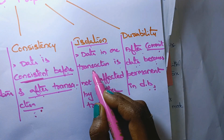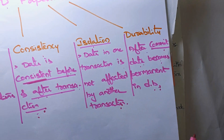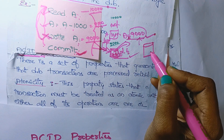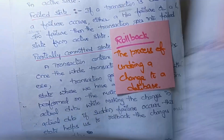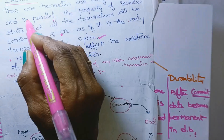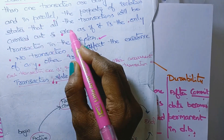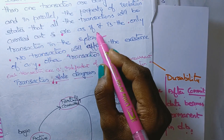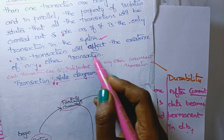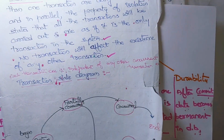Isolation means data in one transaction is not affected by another transaction. A database can be accessed by multiple users at a time. In a database system where more than one transaction is being executed simultaneously, the property of isolation states that all transactions will be carried out as if each is the only transaction in the system — no other transaction will affect the execution of any other transaction.